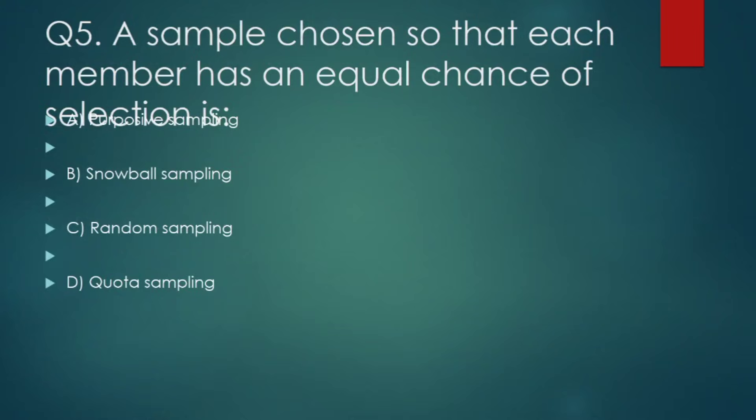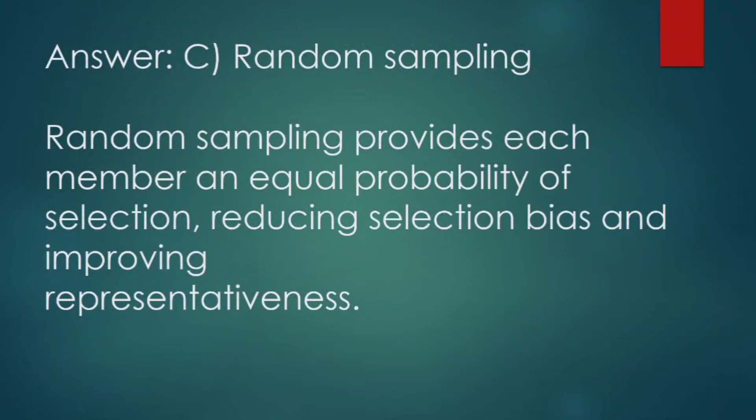A sample chosen so that each member has an equal chance of selection: (A) purposive sampling, (B) snowball sampling, (C) random sampling, (D) quota sampling. Correct answer: random sampling. Random sampling provides each member an equal probability of selection, reducing selection bias and improving representativeness.